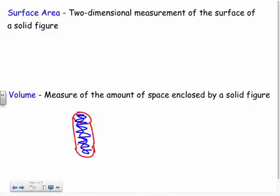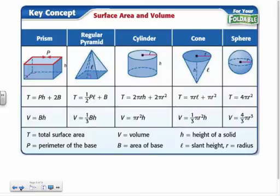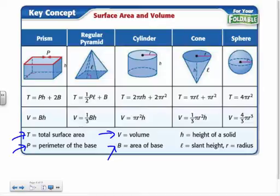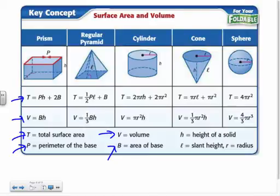This is stuff you've seen in previous years, and now we're going to expand on it. We have formulas here and you'll be given these at test time until later in the year when we expand further. T stands for total surface area, P for perimeter, B for volume, capital B for area of the base. For a prism, here's the surface area formula and here's the volume formula — and likewise for other shapes.